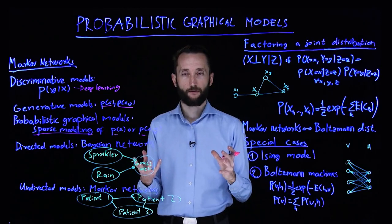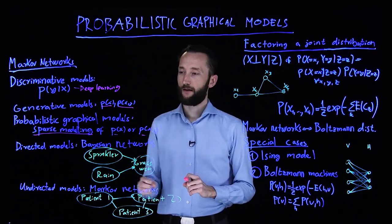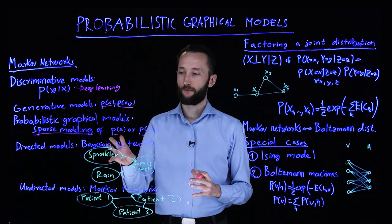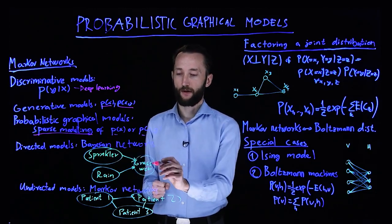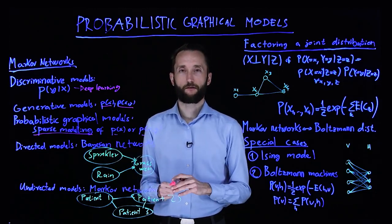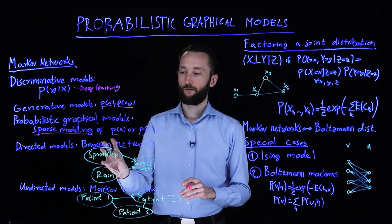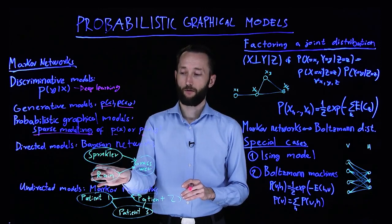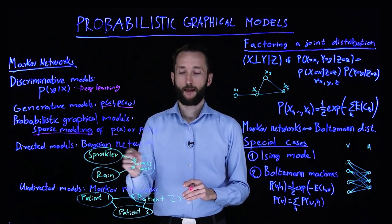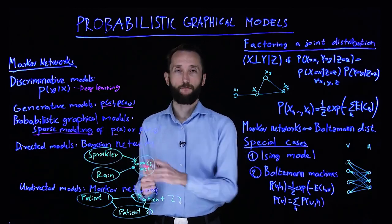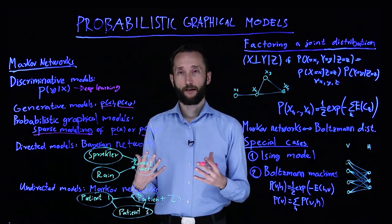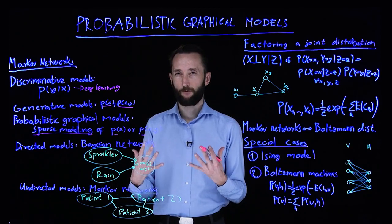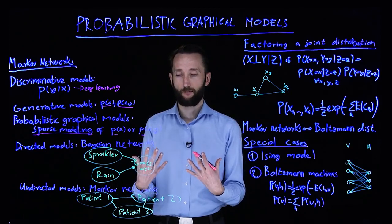There are two main types of probabilistic graphical models. One where the underlying graph is directed — these are called Bayesian networks. For instance, if you have an observation that your grass is wet and you have two other random variables — one saying that the sprinkler was on or off, and the other whether it was raining — then you can make backward inference and ask: given that the grass is wet, what's the probability that it was raining? These are the kind of queries that will be difficult to solve by a neural network.